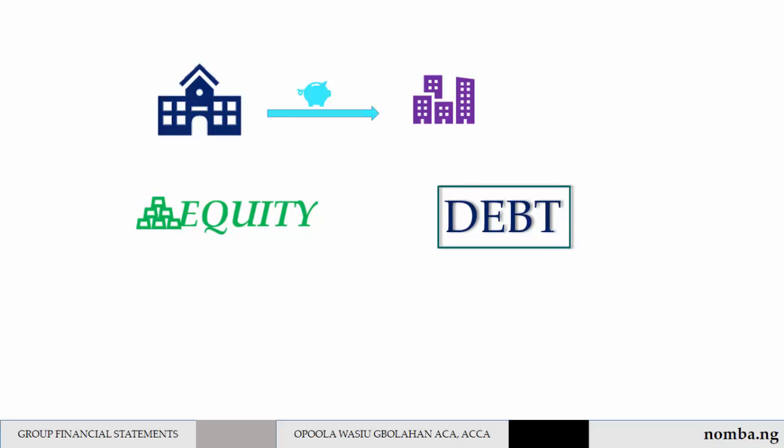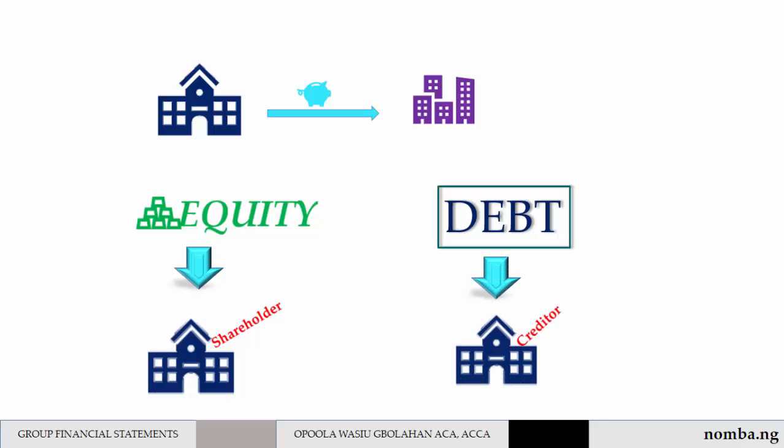Investment in equity of another company makes the investor a shareholder, while investment in the debt of another company makes the investor a creditor. Our focus in Group Financial Statements is investment in the equity of another company.